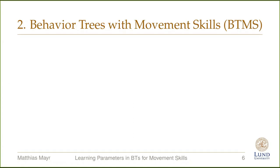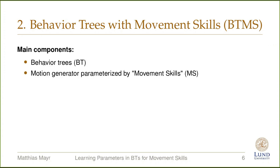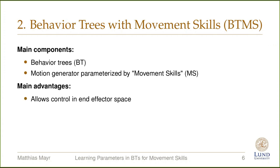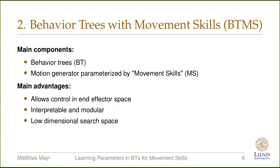Our proposed policy consists of two main components: behavior trees and a motion generator that is parameterized by movement skills depending on the task and the parameters of these movement skills. This formulation has several advantages. It allows controlling the robot in end-effector space. It is interpretable and modular. We can see which parts of the behavior tree are active in a certain state, and we can easily combine trees with other trees. This formulation also allows a low-dimensional search space, as well as easy adaptation to changes in the environment.